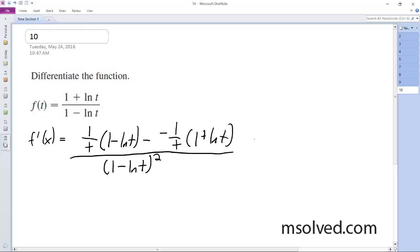And this ultimately simplifies down to, well, let me go ahead and do this first, so 1 over t minus 1 over t ln t plus 1 over t plus 1 over t ln t, and then 1 minus ln t squared.